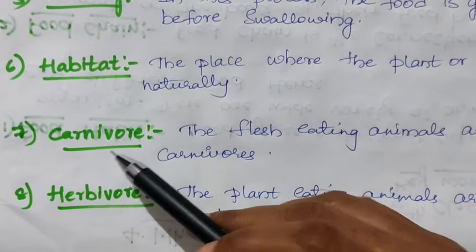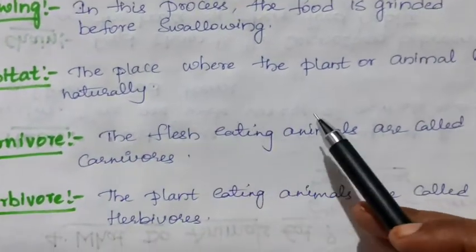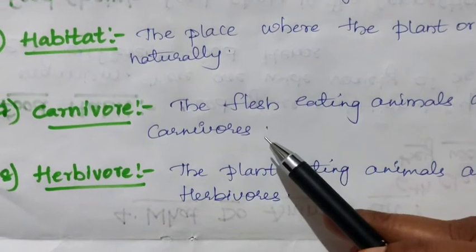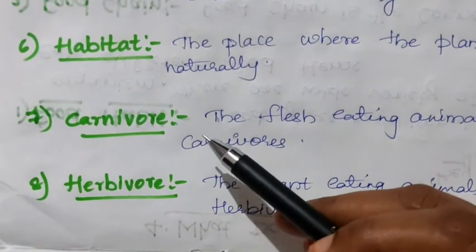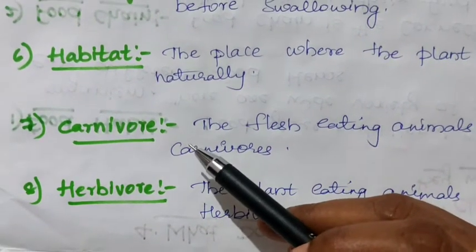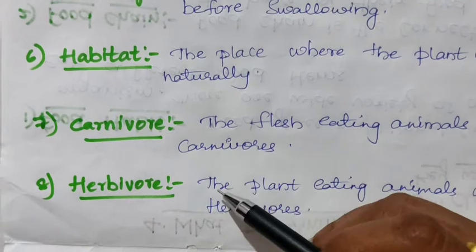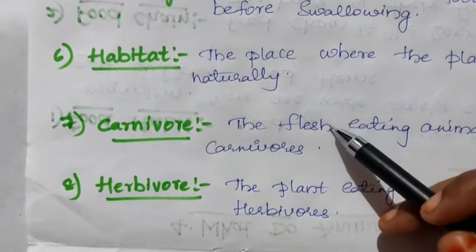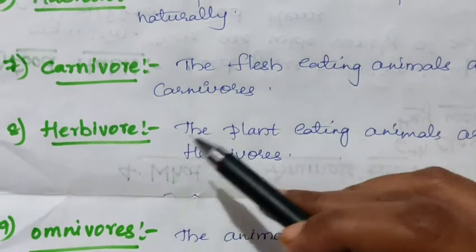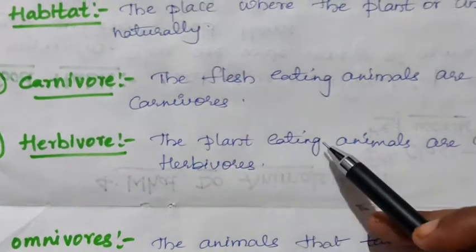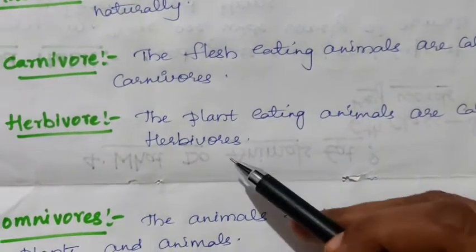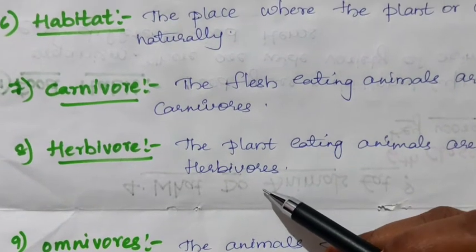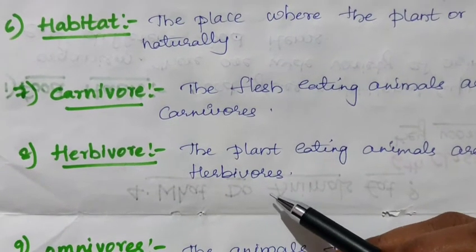Carnivore: the flesh-eating animals are called carnivores. Herbivore: the plant-eating animals are called herbivores. Animals that eat plants and leaves are called herbivores.